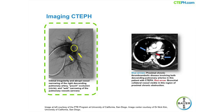Pulmonary angiography is still generally considered the gold standard technique for assessing operability in CTEPH. The angiographic patterns found in CTEPH include pouch defects, webs and bands, intimal irregularities, abrupt narrowing of the pulmonary arteries, and complete obstruction of the vessels at their points of origin.